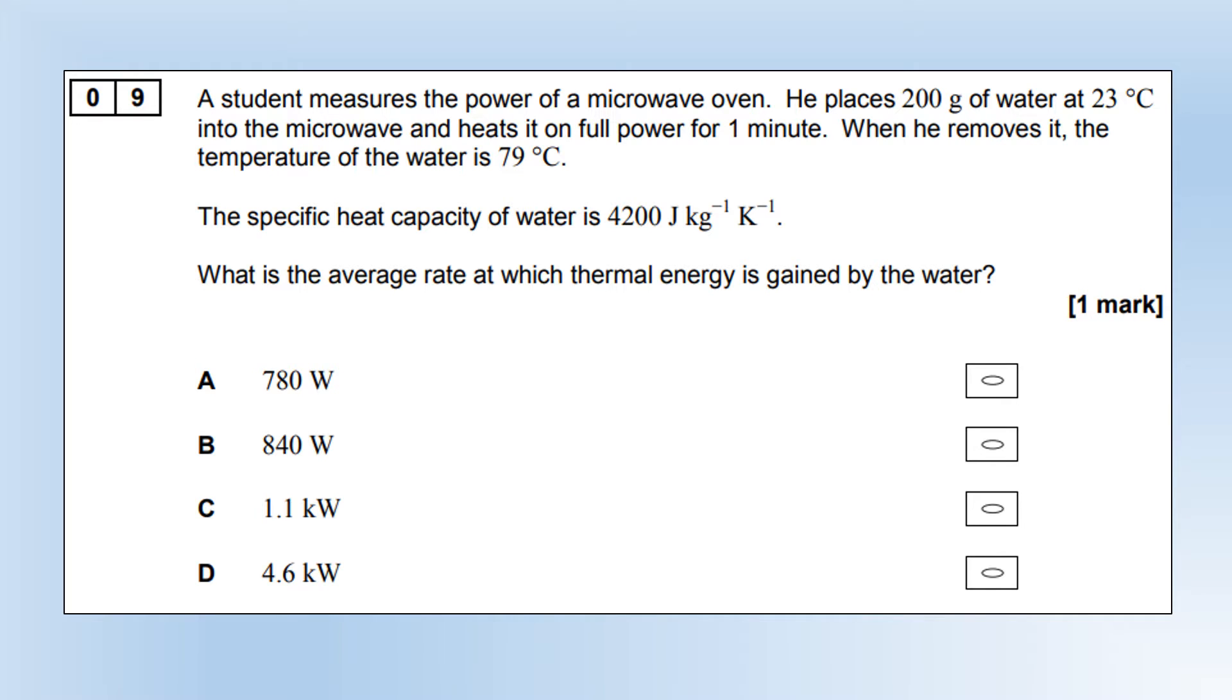A student measures the power of a microwave oven. We've got 200 grams of water at 23 degrees centigrade, and we heat it on full power for one minute. Then it removes it. The temperature is now 79 degrees. The specific heat capacity is still 4200. What is the rate at which thermal energy is gained by the water? We're going to be using Q equals MC delta T. But in the place of Q, I'm going to put power times time. We want the rate of thermal energy, so we want the power. Rearrange it, plug the numbers in, and we end up with the power. It's option A.